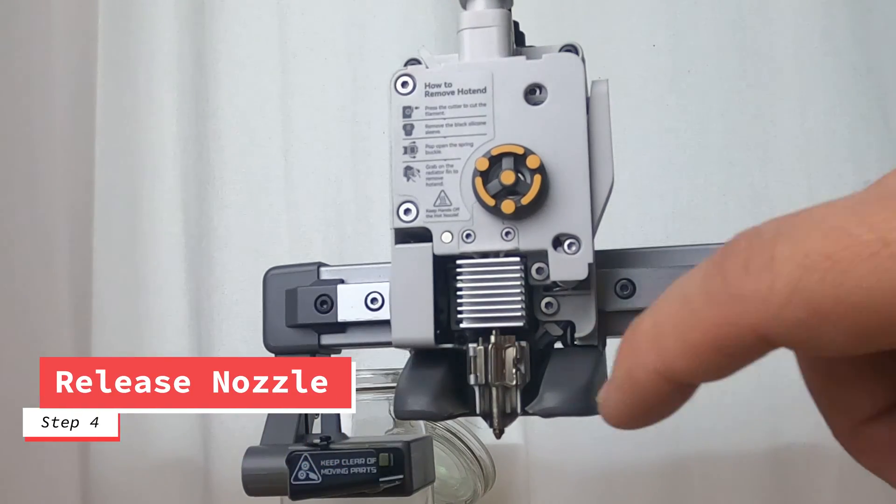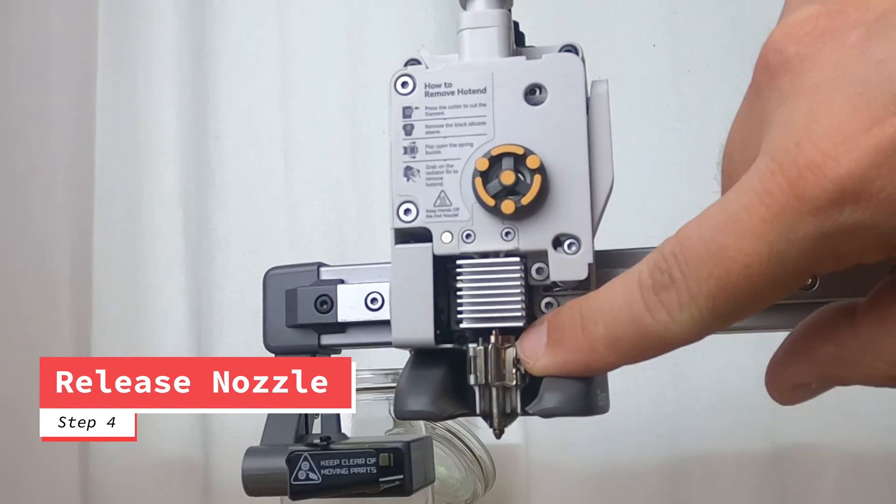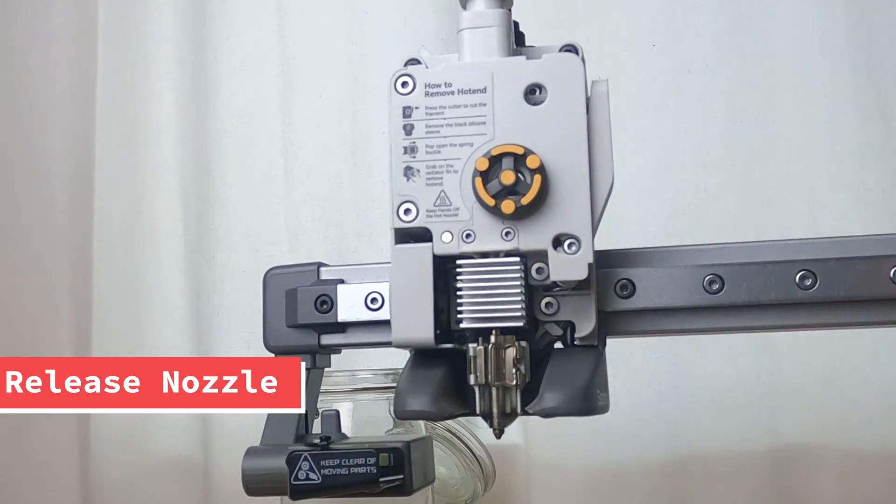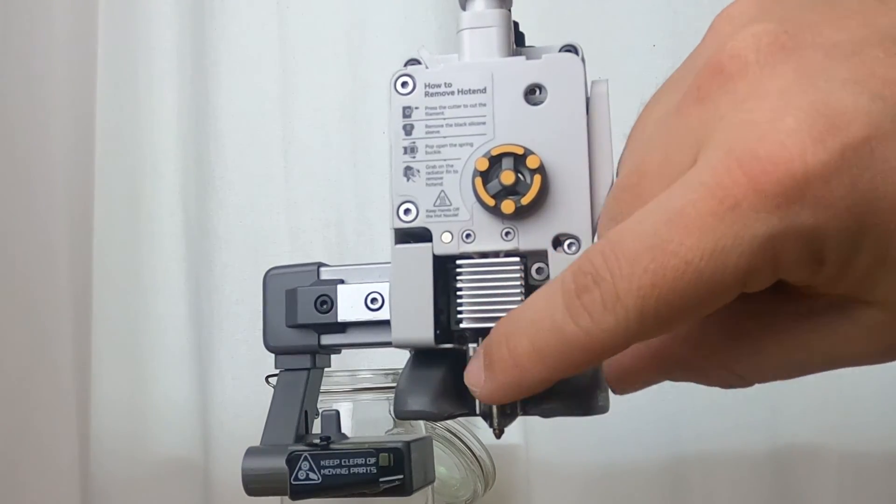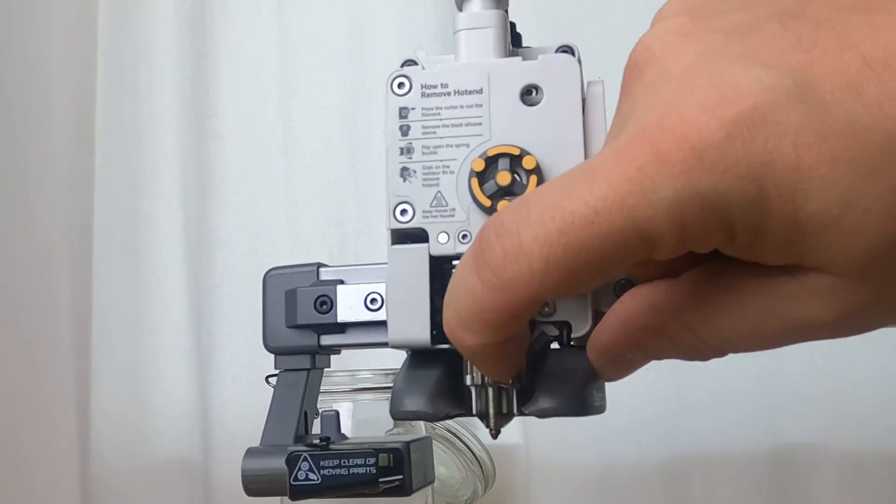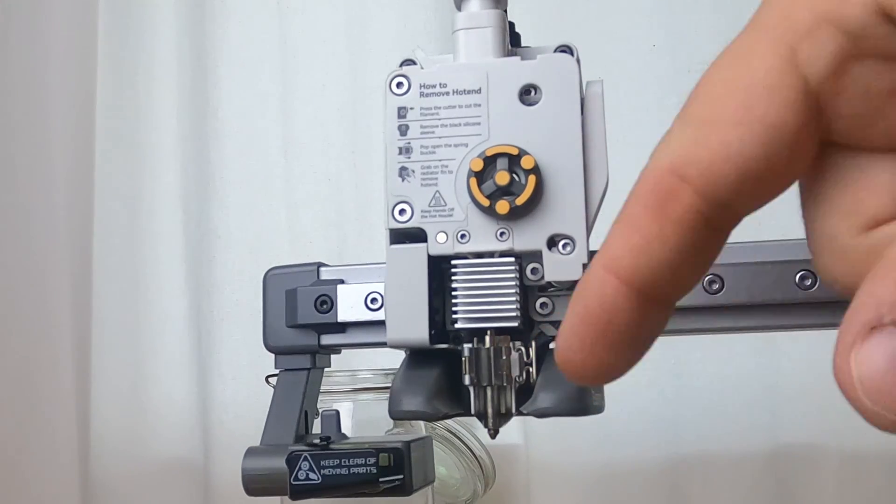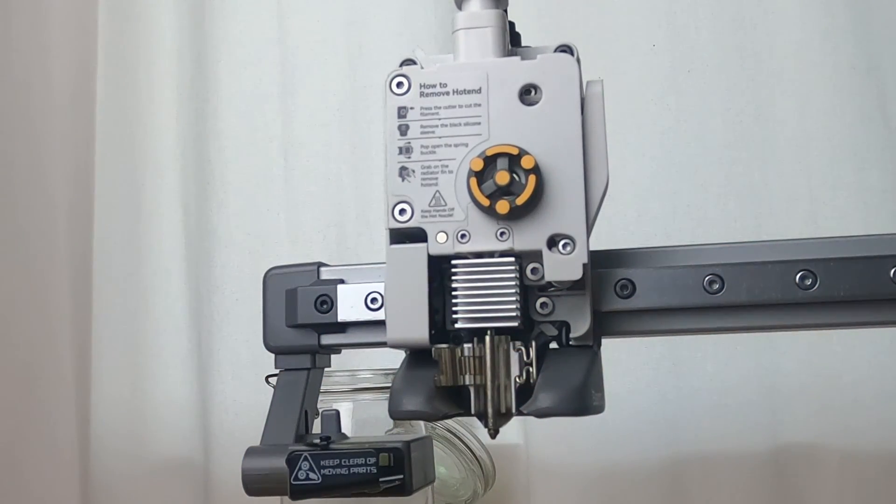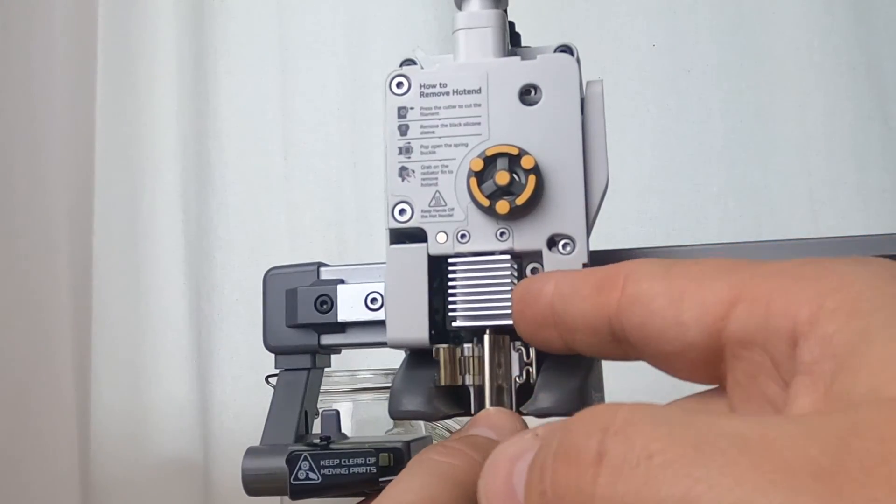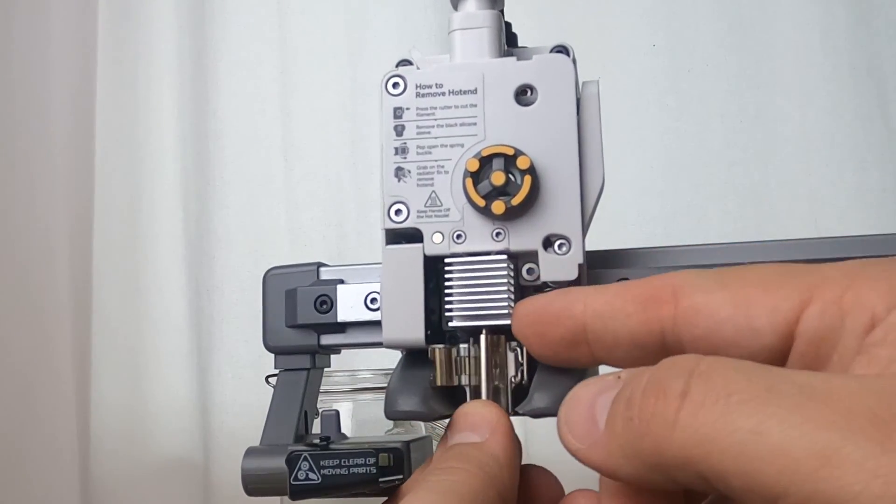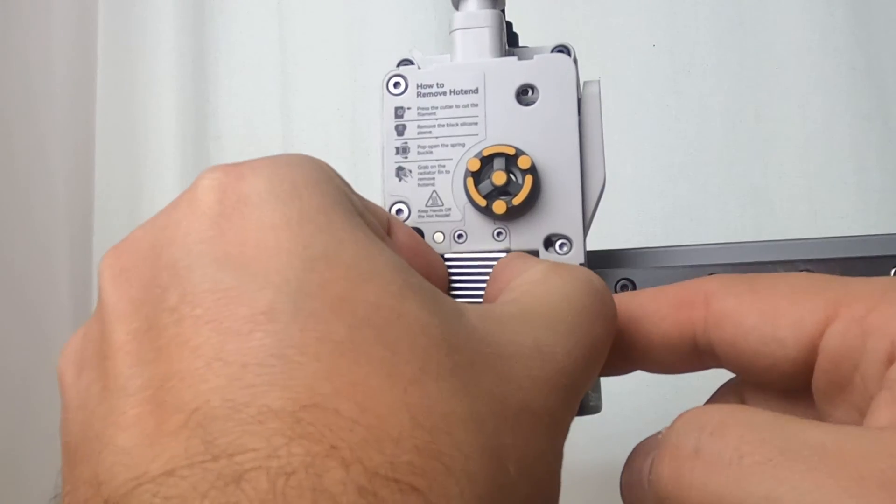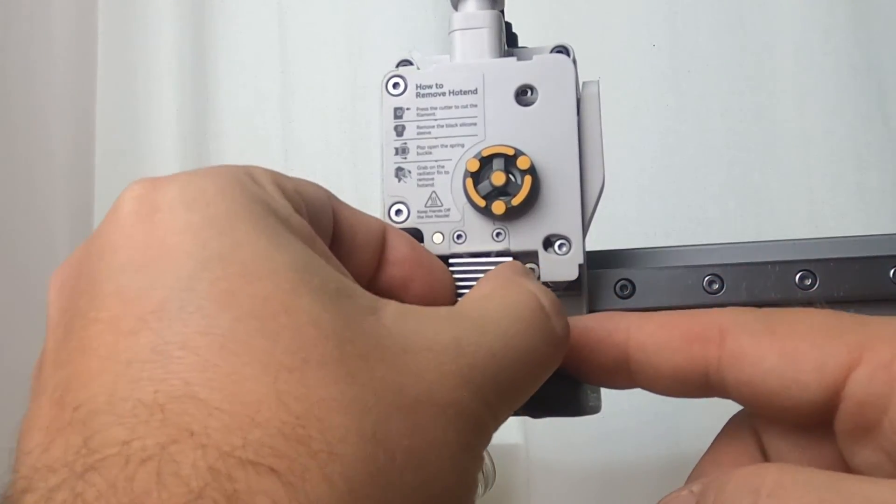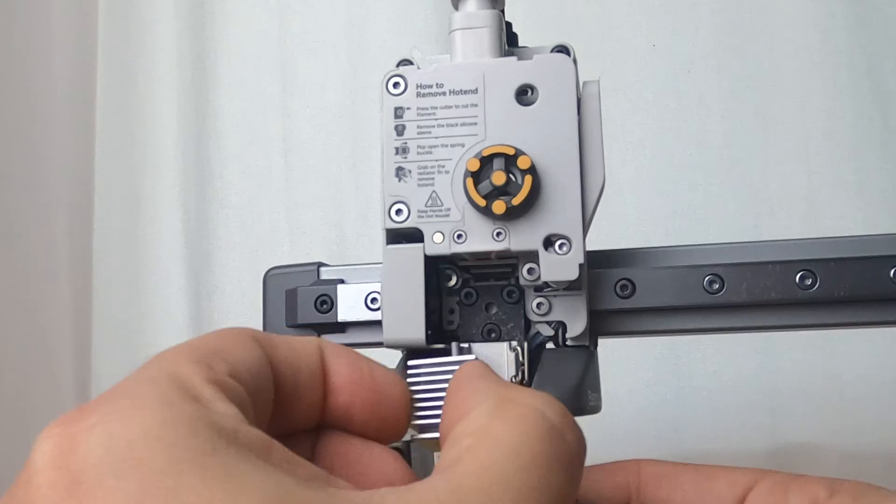The next thing you're going to want to do is look for this little latch here. You're going to go ahead and pull back the latch, open the little gate, and then from there you can just grab it by the nozzle here, and gently, or actually from the heat sink up here, and just gently bring it down and out.